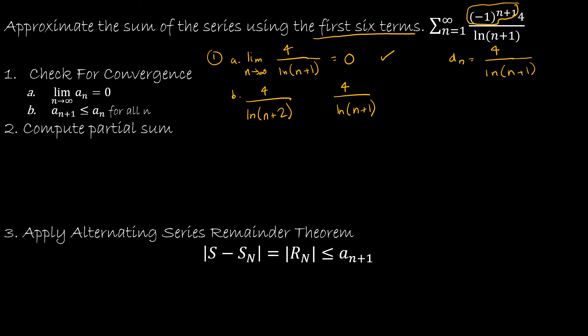So A check. Check B I have to then determine if a sub n plus one or four over the natural log of n plus two. Is that how does that compare to four over the natural log of n plus one. Well I know that as this value increases as we just talked about the denominator will increase and the entire fraction will decrease. So it makes sense that this would always be true. It will always be true that a sub n plus one is less than or equal to a sub n. So my first conditions are met.